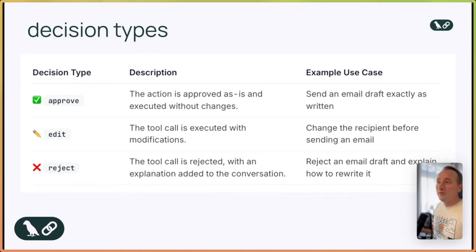We can approve, which means we allow the tool call to run exactly as proposed. We can edit, which means we modify the tool call before it executes, for example, to fix a recipient email address or tweak the email body. Or we can reject the proposal and deny the action and send feedback to the agent explaining why it shouldn't proceed with its current draft.